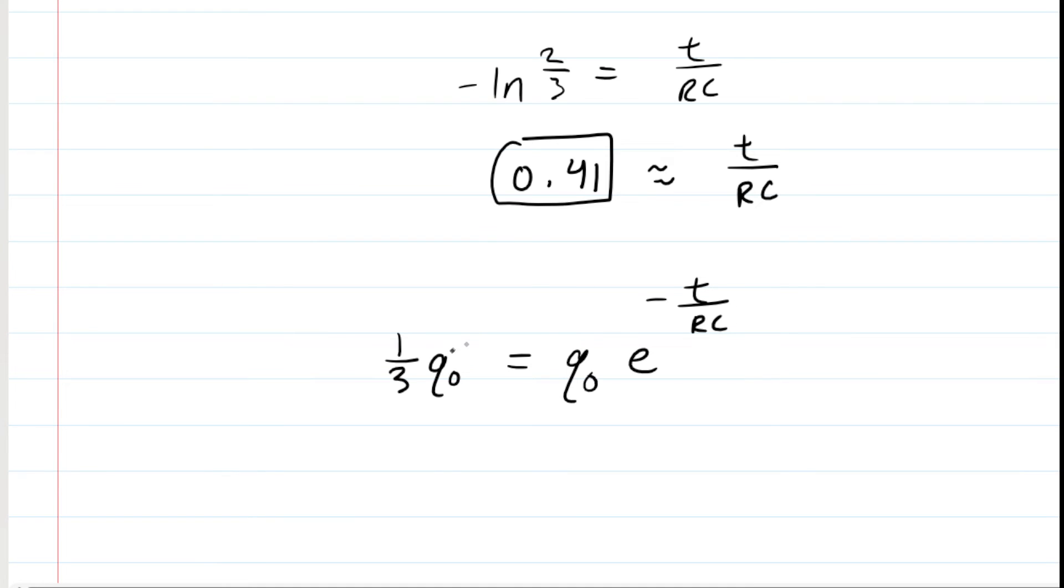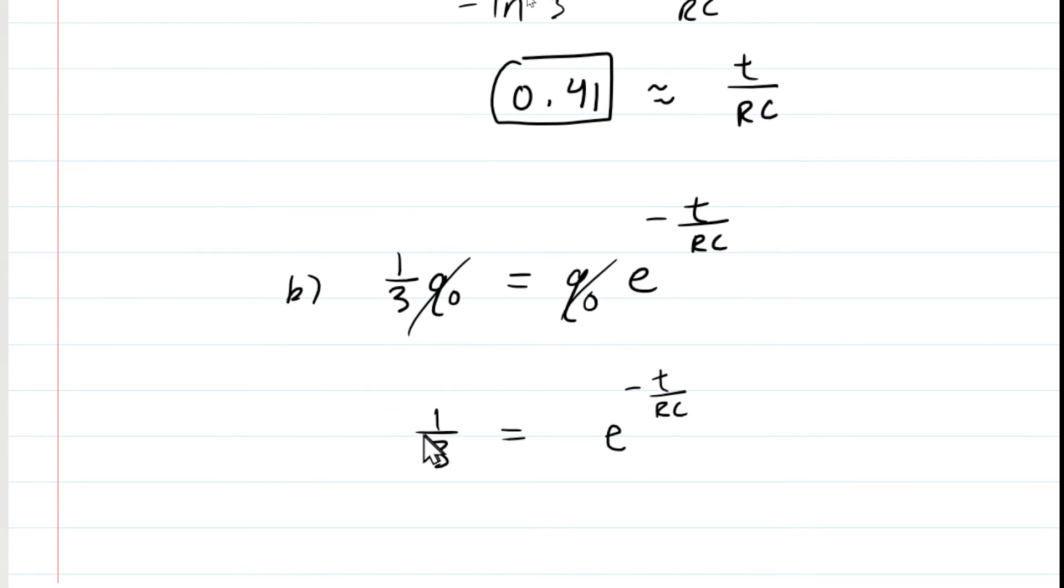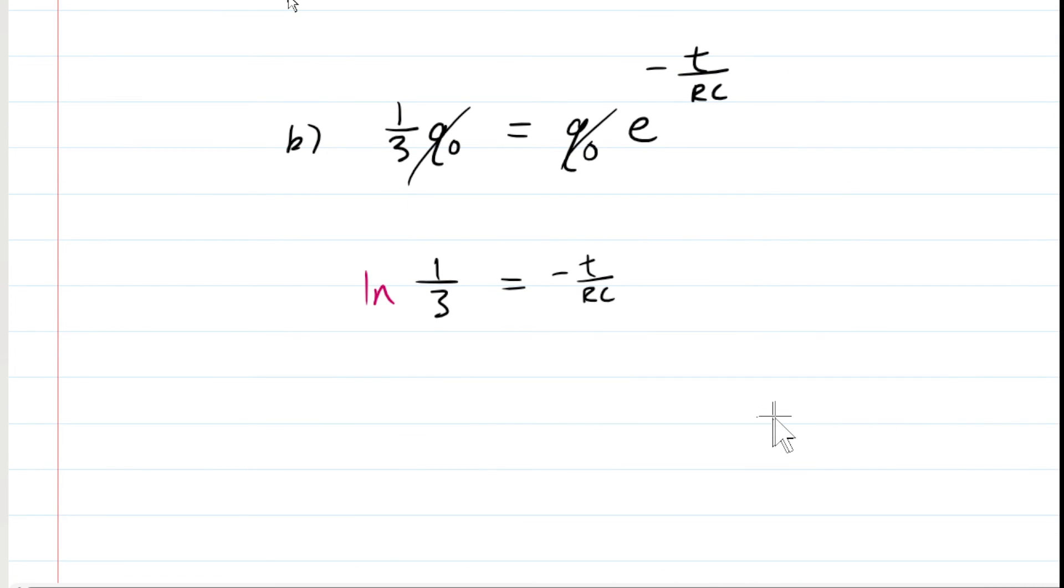The steps here are very similar. We can cancel out the Q-naughts. We would then take the natural log of both sides, bring that power down. The natural log of e is just 1. Then divide both sides by negative 1, making this side negative and the other side positive. That is how you isolate what the question is looking for. The negative natural log of one-third is around 1.1. The final answer for part B is 1.1.